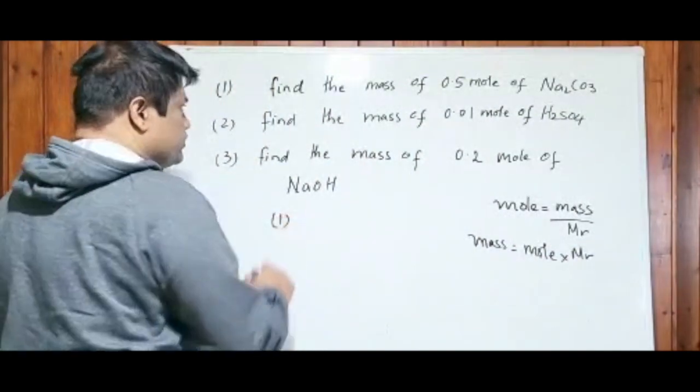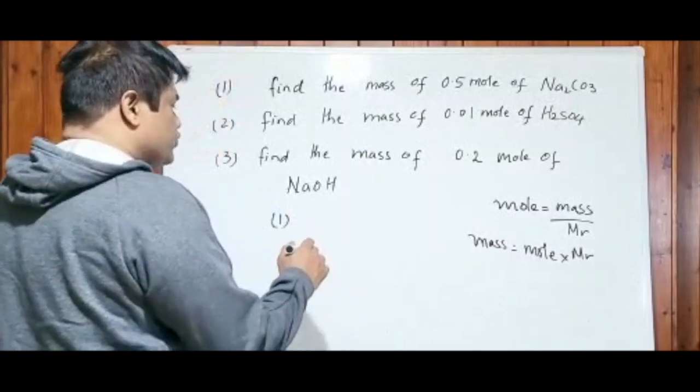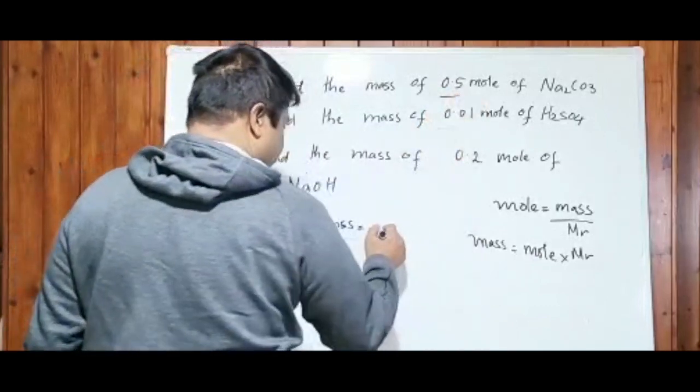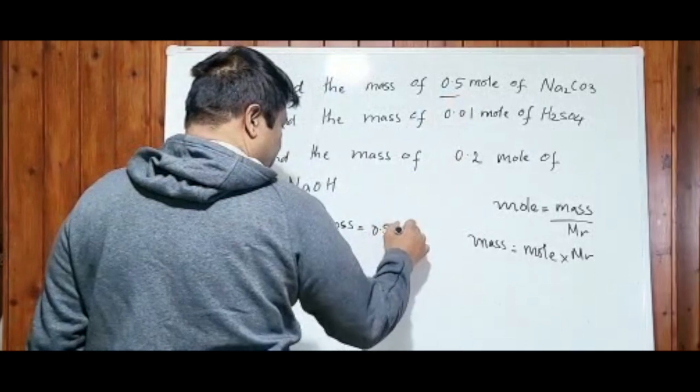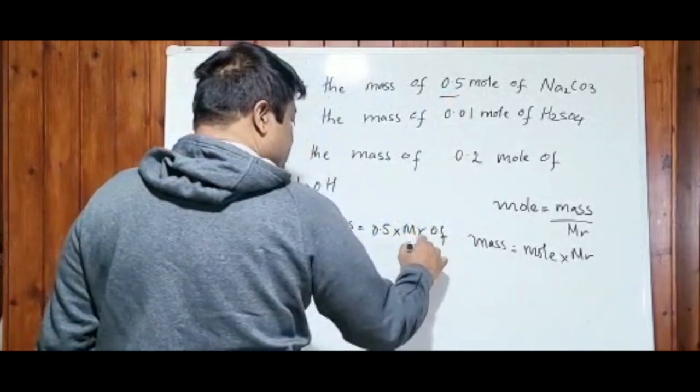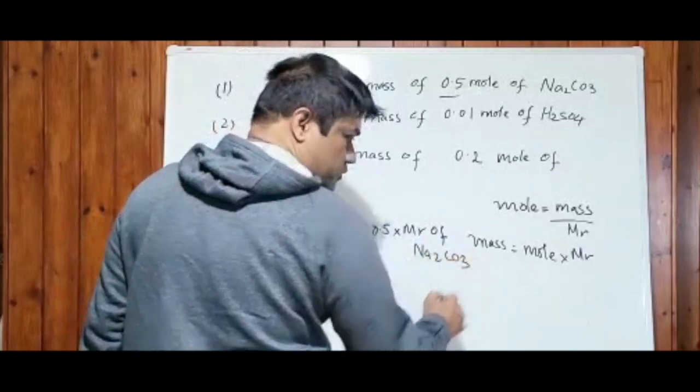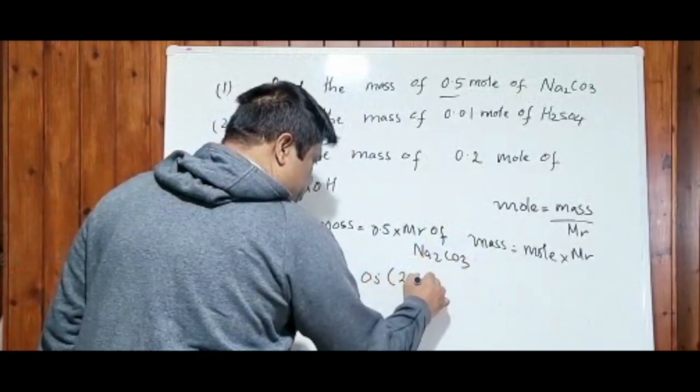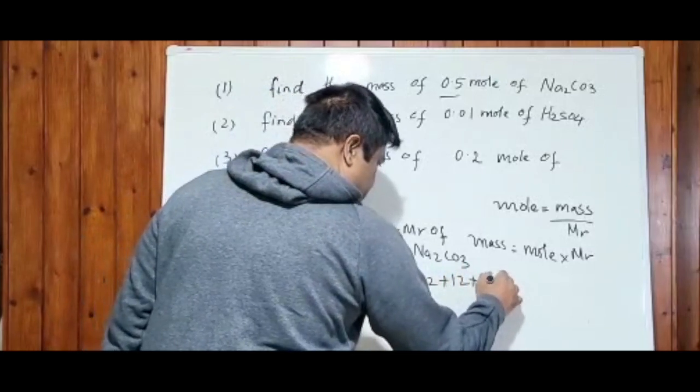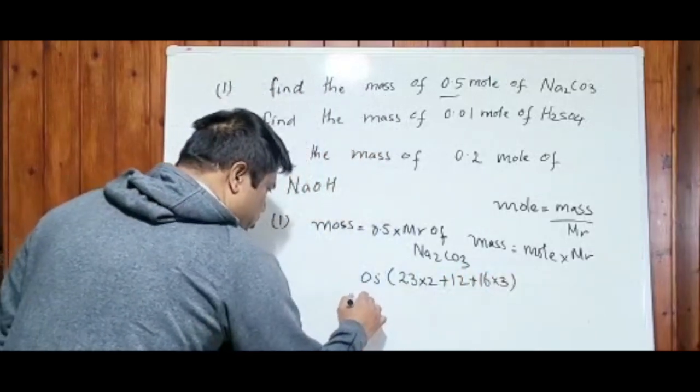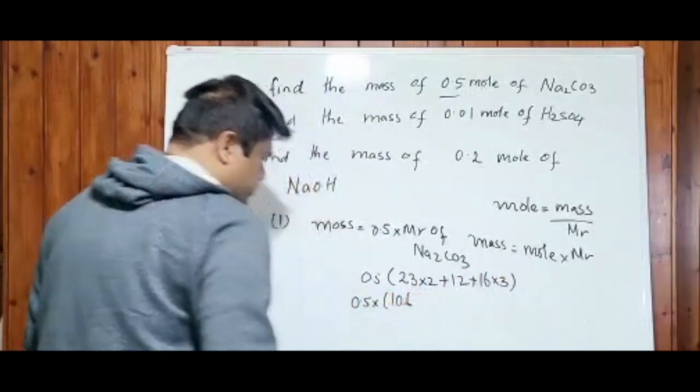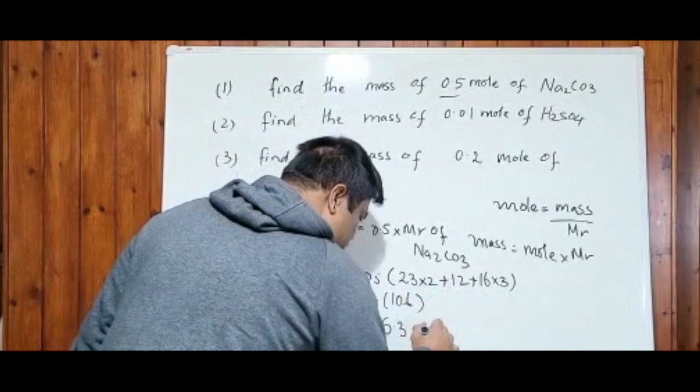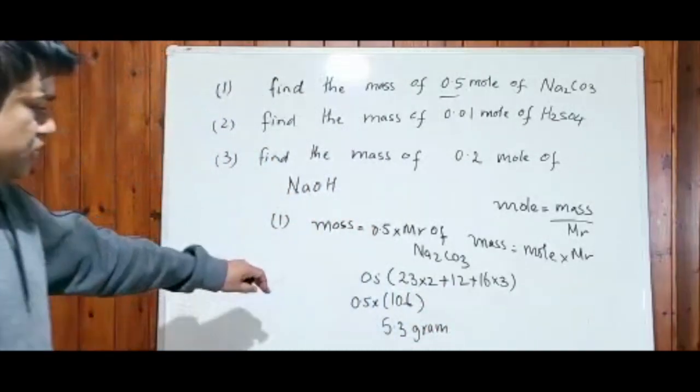So mass equals to mole, which is given, 0.5, times MR of Na2CO3, sodium carbonate. 0.5 times sodium 23 times 2, plus 12, plus 16 times 3 (48). So 0.5 times 106. When you work it out, you will get 53 grams. So mass has the unit, so you have to mention the gram at the end.